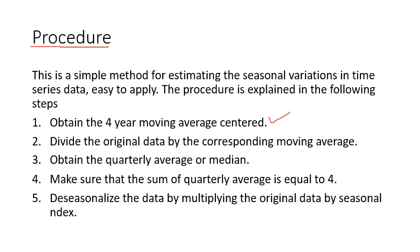When the four-year moving average centered is obtained, then we rearrange the data in rows and years and quarters. Then divide the original data by the corresponding moving average, and the result will be in fraction. Then we arrange the data in years and columns and then obtain the quarterly average or median.